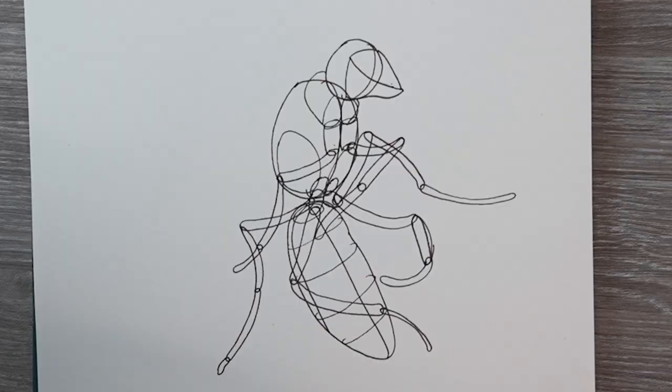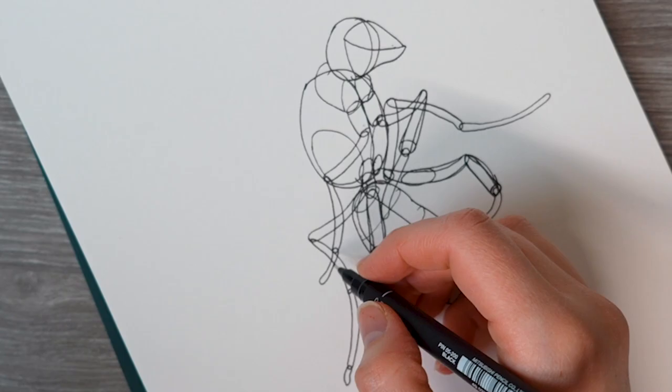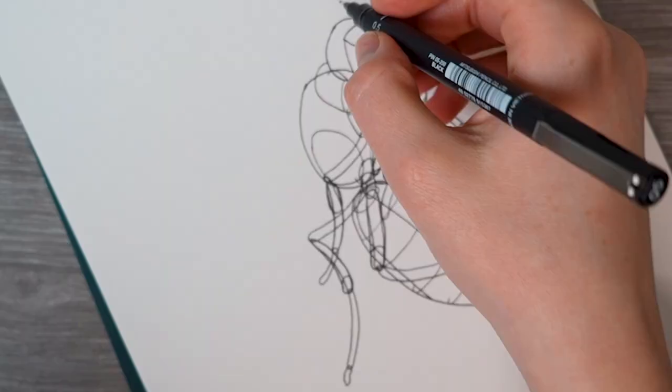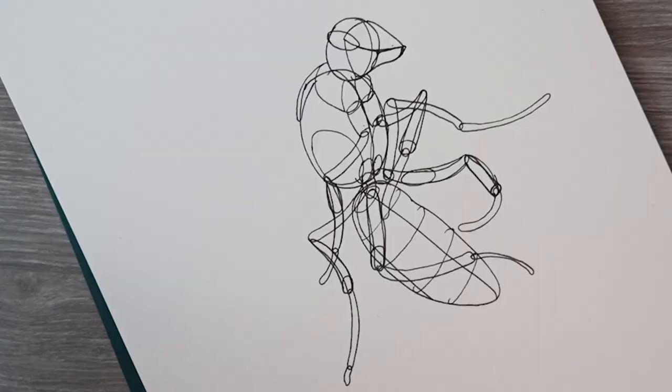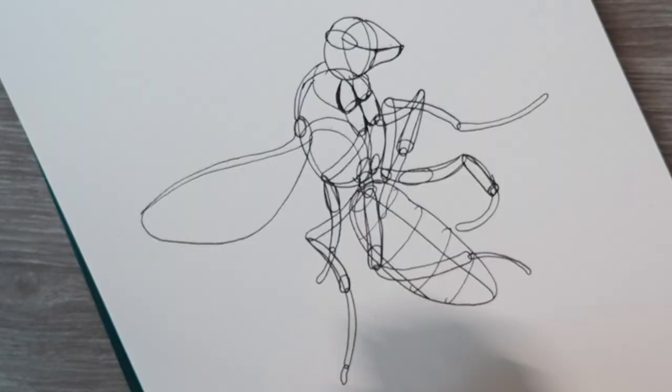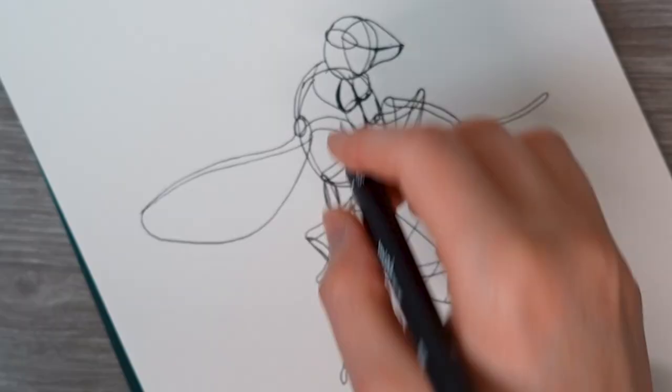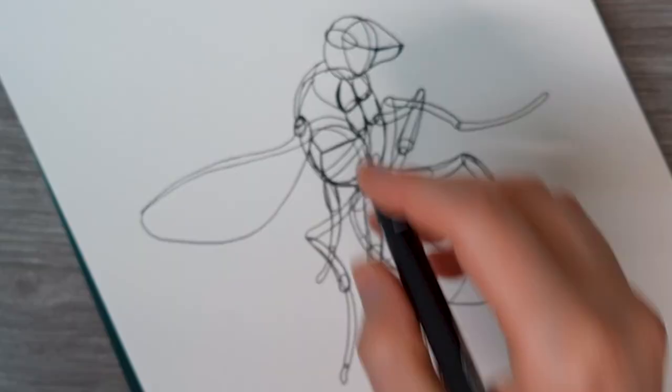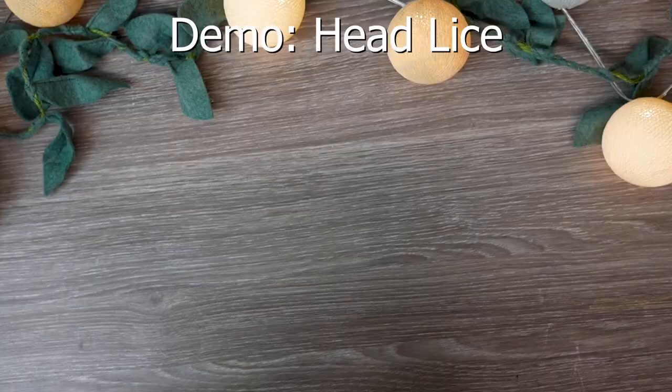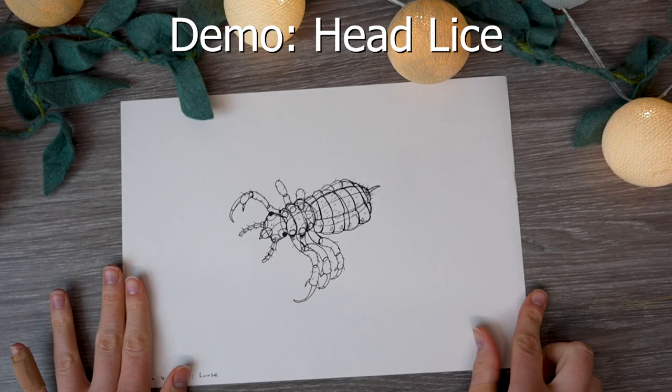The first two pages you saw before the wasps are warm-up pages where you are just practicing these sausage forms or organic shapes he calls them which are going to be used a lot in this lesson. Just like other lessons you start with mapping out the simple shapes and then defining the form to create the creature on the page.